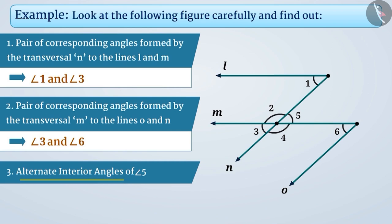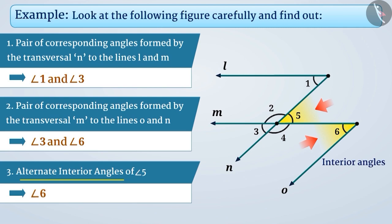Now let's find the alternate interior angles of angle 5. If we talk about angle 6 formed by the transversal M to the lines O and N, its vertex is different from the vertex of angle 5. Both angles are interior and on the opposite sides of the transversal M. Therefore, we can say that angle 6 is the alternate interior angle of angle 5.